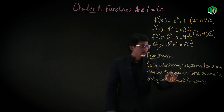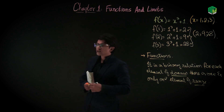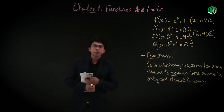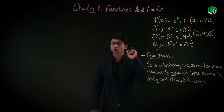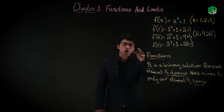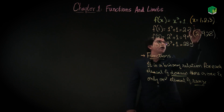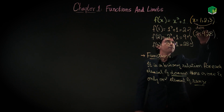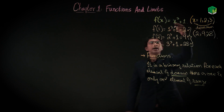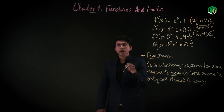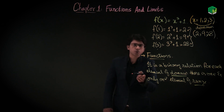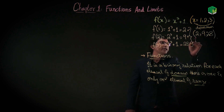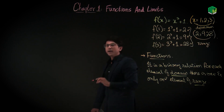Now you have two new terms: domain and range. Domain means the set of inputs — that is known as the domain. The output is known as the range. So if inputs are 1, 2, 3, the domain is that set. If the outputs are 2, 9, 18, and 28, that is the range. So you have two sets: a set of domain and a set of range.